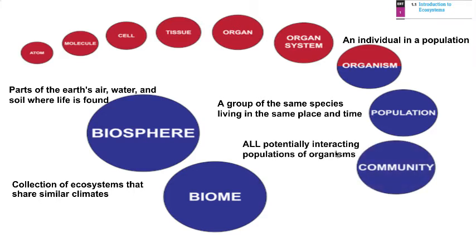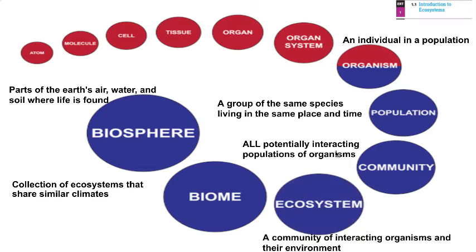We'll work larger to the term community. A community is all potentially interacting populations — these could be different organisms or different species that are potentially interacting. So like a population of oak trees with a population of squirrels — together they would be a community.